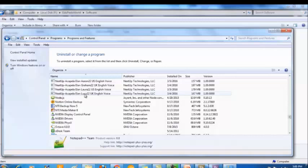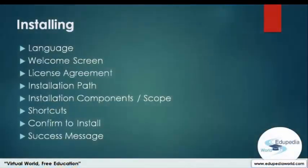The uninstallation process is not as complex as the installation process. Let's summarize what we did today. In a typical installation process, most applications ask what language the instructions should be in — English comes as the default. Next comes the welcome screen, which mentions the version of the application and other relevant information. Then you have to read the license agreement — a long document that mentions the terms and conditions you need to agree to in order to install the application. Then you specify the installation path.